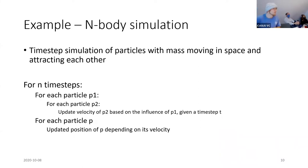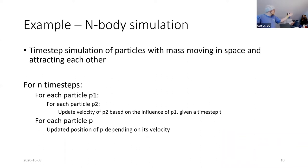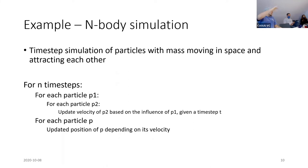I'll show an example using an N-body simulation, where the benefits are clearly visible. The code runs for N time steps. We have a buffer of particles. For each particle P1, we iterate over each particle P2, forming pairs, and update the velocity of P1 based on the influence of P2. That's two nested loops. Afterwards, for each particle, we update its position based on its velocity. Those are the two steps.